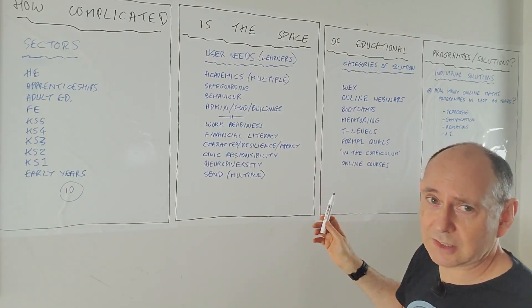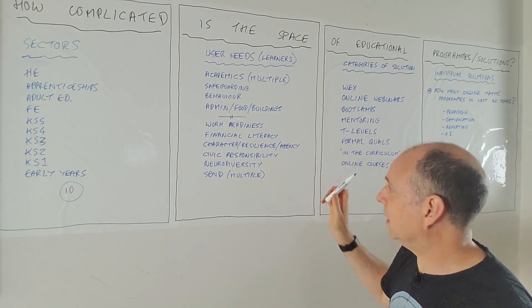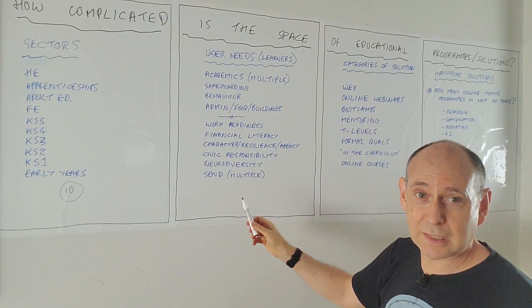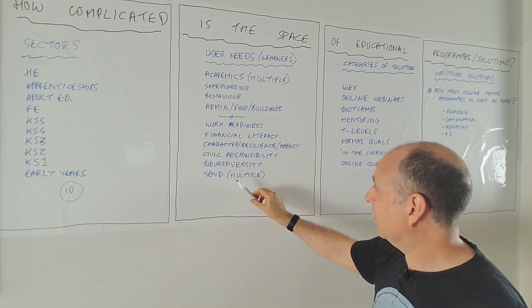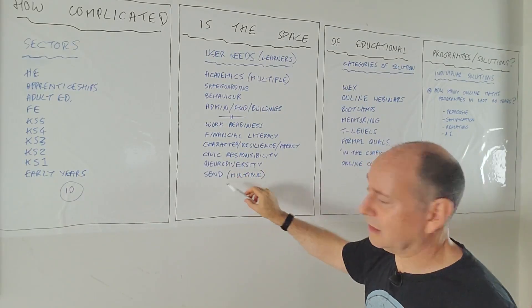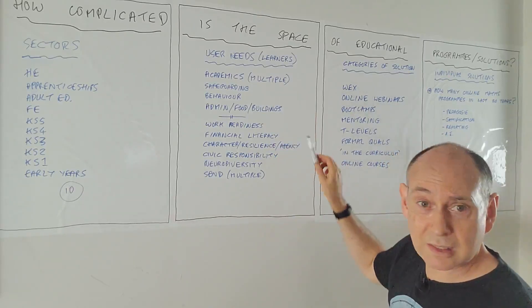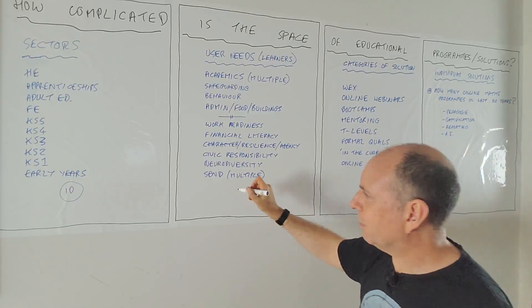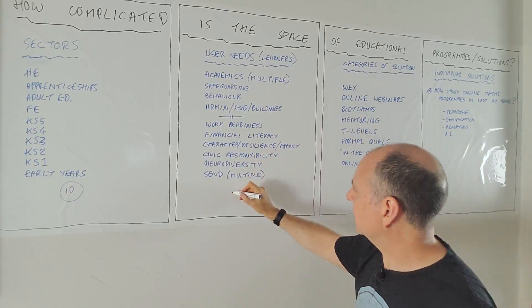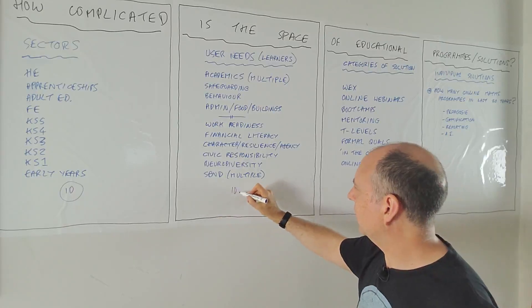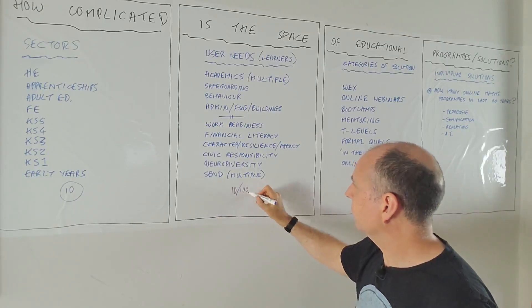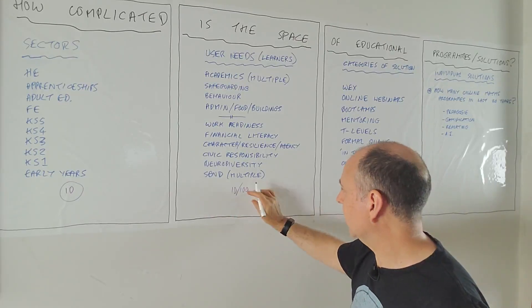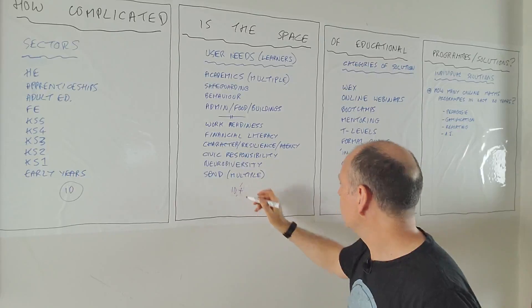Work readiness, financial literacy, character, agency, resilience, civic responsibility, neurodiversity, and SEND. SEND's an interesting one. There might be as much complexity in SEND as the whole of the rest of the list put together, because there's massive complexity. But let's say there's 10 things on there. But is it 10? Is it 100 with things like this? I don't know. It's more than 10. 10 plus.